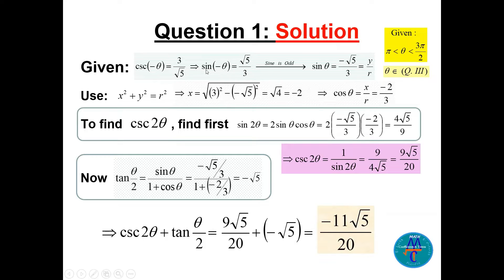Given cosecant of negative theta, we find the reciprocal: sine of negative theta equals square root of 5 over 3. Since sine is an odd function, sine of theta equals negative square root of 5 over 3, which is y over r. Theta is in quadrant three, so both sine and cosine are negative. Using x² + y² = r², x equals negative 2, so cosine of theta equals negative 2 over 3.